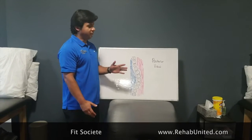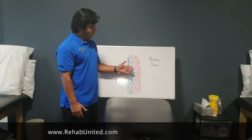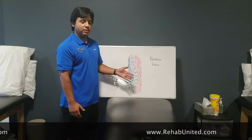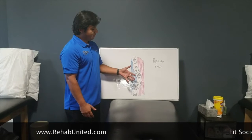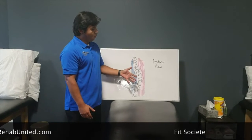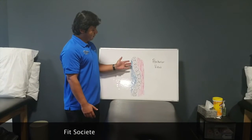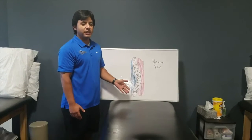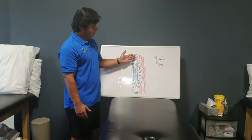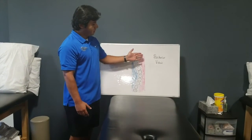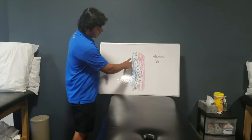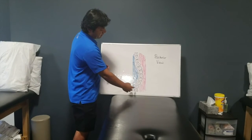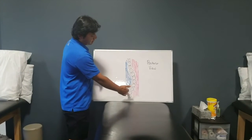Today we'll be focusing on what we call a C-curve scoliosis, emphasizing one portion of the spine, for instance just the thoracic spine. As you can see here, we have a patient with a posterior view showing a scoliotic C-curve going to the right.